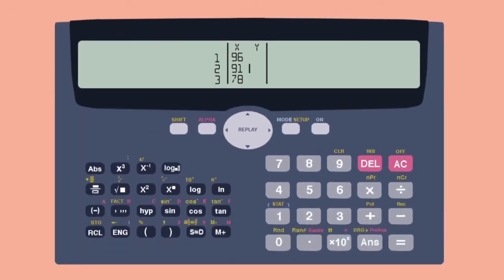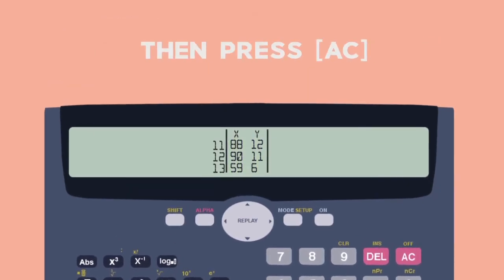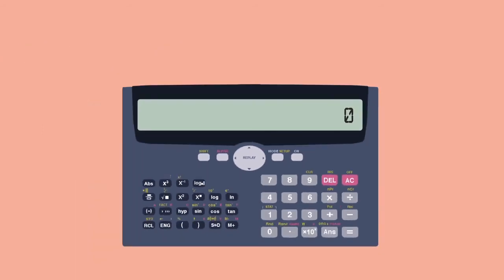Then move the cursor across and up and enter 12 under Y, the number of Saturdays opposite 96 in the X column. Continue to enter the other Y values in order so that they pair off correctly with the corresponding X values. Then press the AC button. The screen clears but the data remains stored.